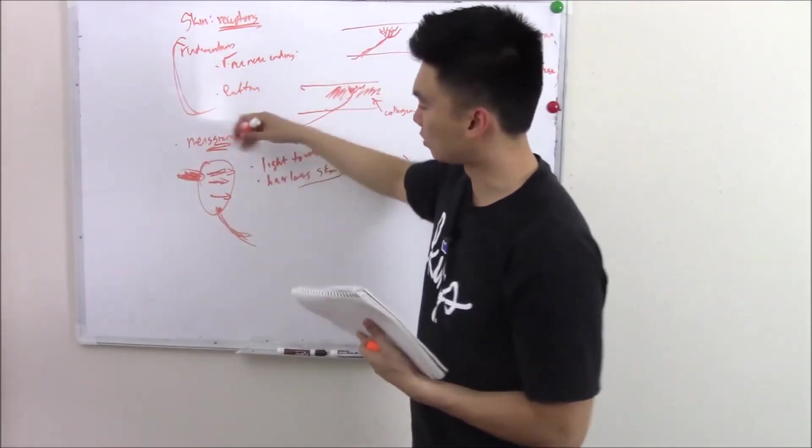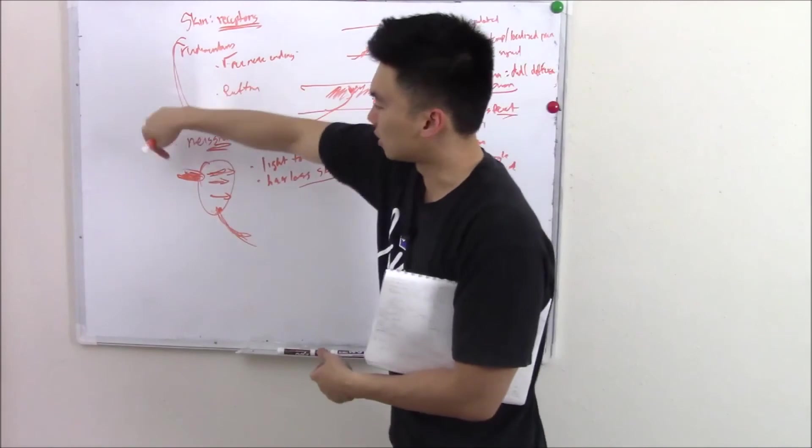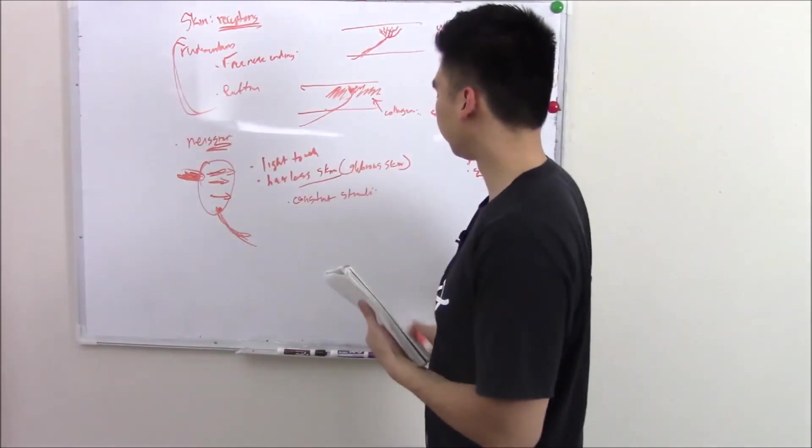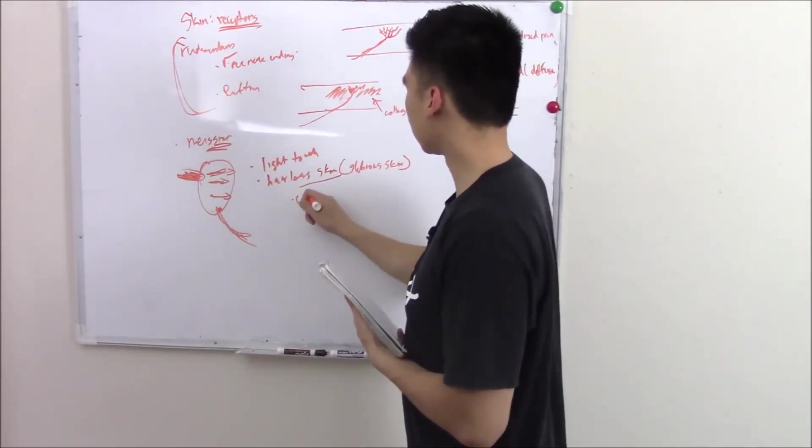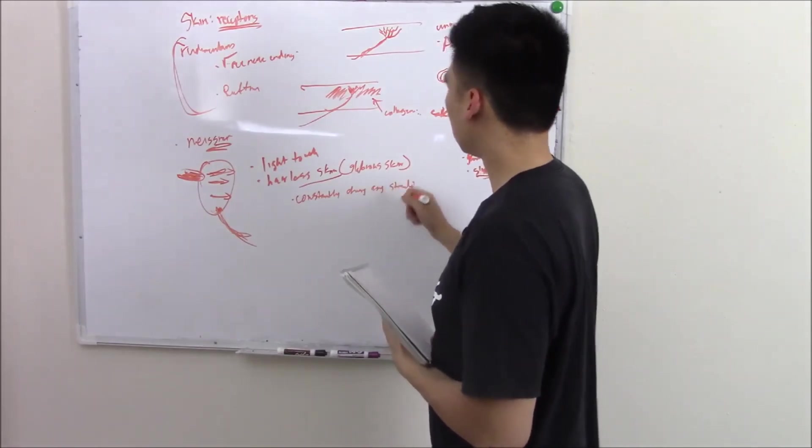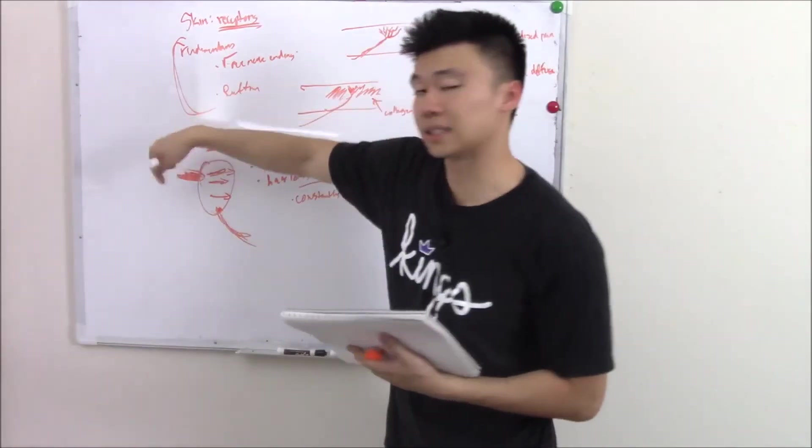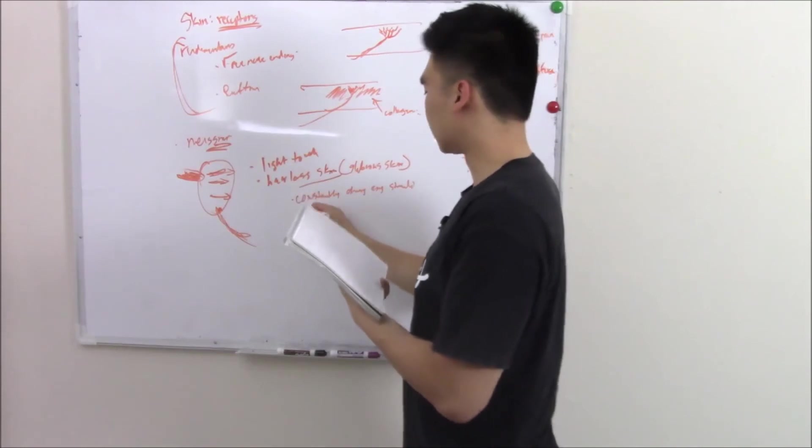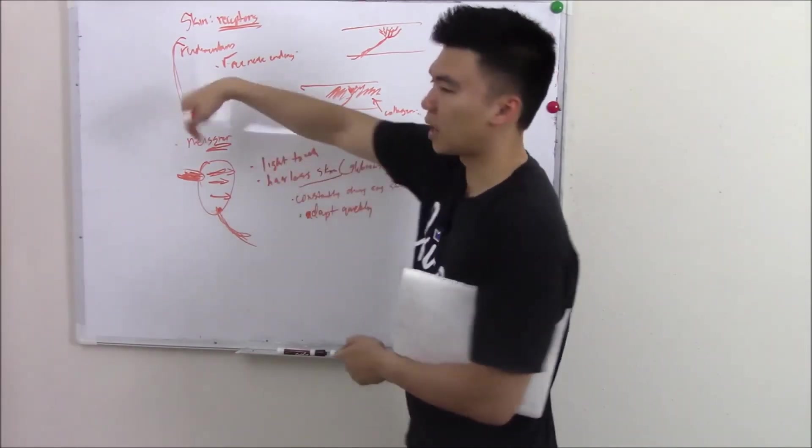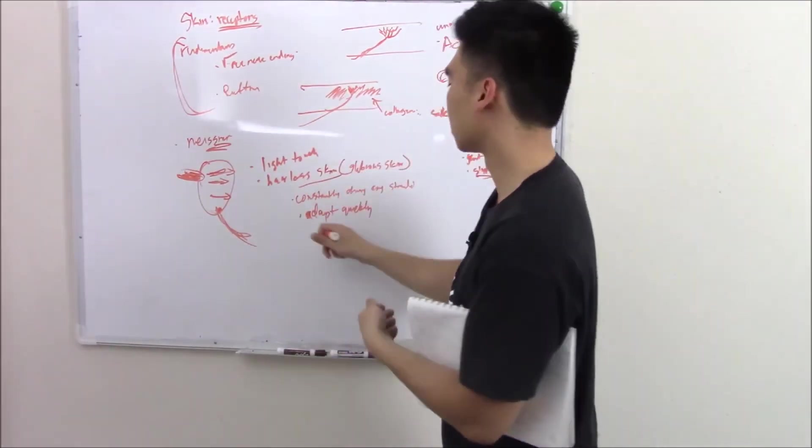Now if you withdraw that stimuli, then these plates will kind of readjust and the nerve will stop sending signals. So you need constant, constantly changing stimuli. We can't just leave that stimuli on there. Otherwise, they'll stop sending signals. We need to constantly activate it. A fancy way of saying this is that these Meissner structures adapt quickly. So if you don't have that constant stimuli, then you'll no longer feel it. So your body would have adapted to it.